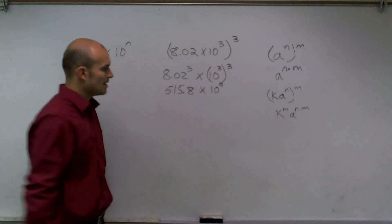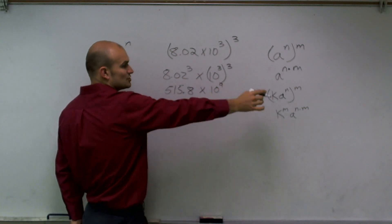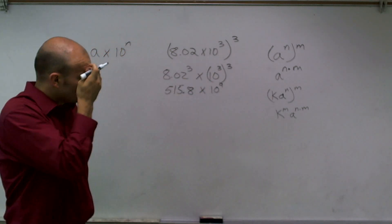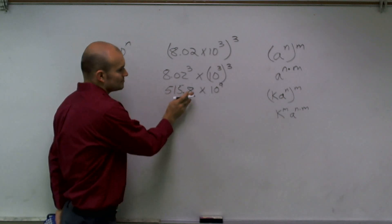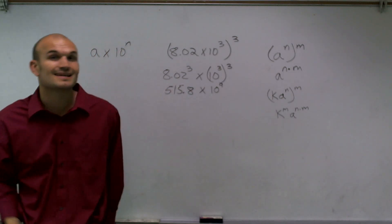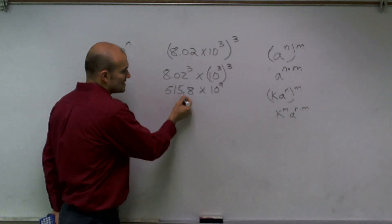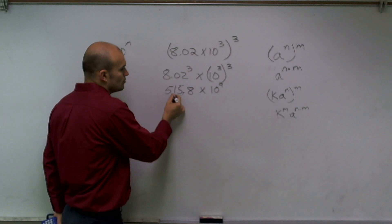Now to finish this problem, so that means I'm going to now move my decimal point over 9 units to the right would be my answer. But our problem is this 515.8 is not between 1 and 10. So to make it between 1 and 10, I'm going to have to move this decimal point over two more units.